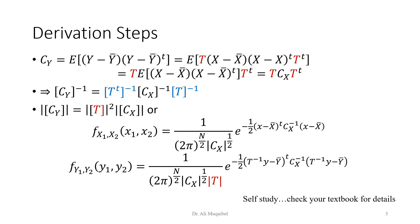Before going to the example, here are the derivation steps. The definition of the covariance of Y is, by definition, the expected value of (Y minus Y-bar)(Y minus Y-bar)-transpose. We replace Y with its equivalent in terms of X. Since T and T-transpose are not random, they go outside the expectation. What remains inside the expectation is the definition of the covariance of X, giving us Cy equals T times Cx times T-transpose.